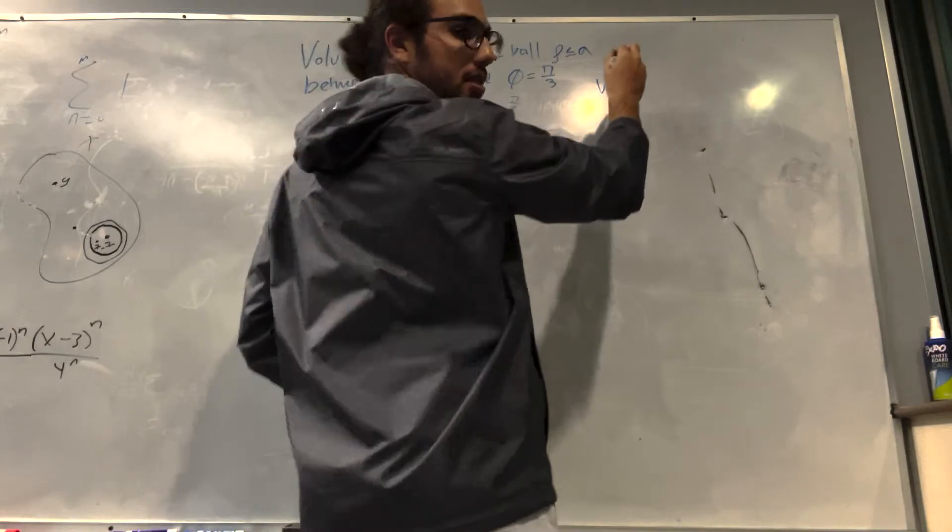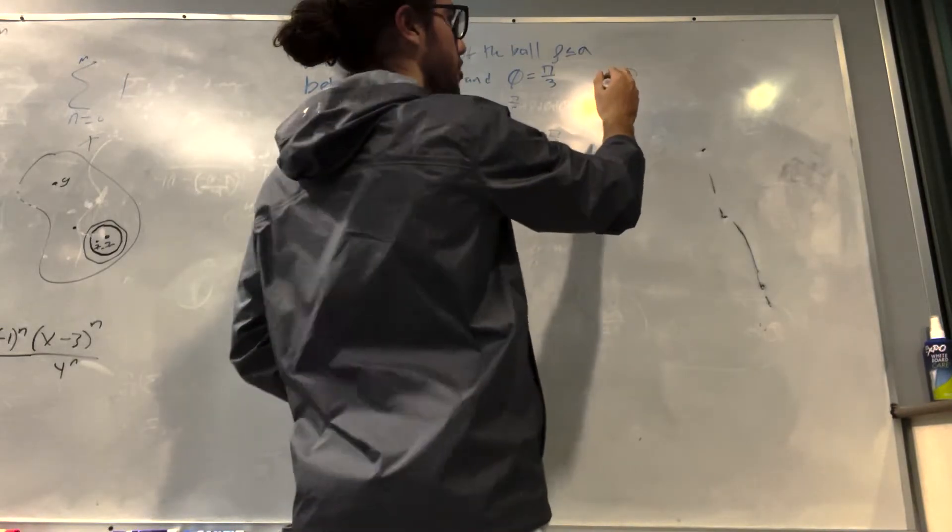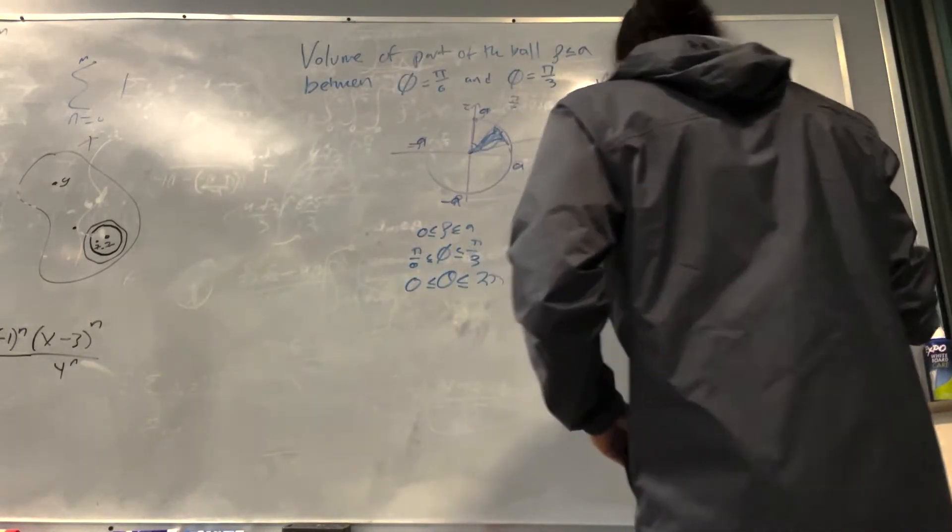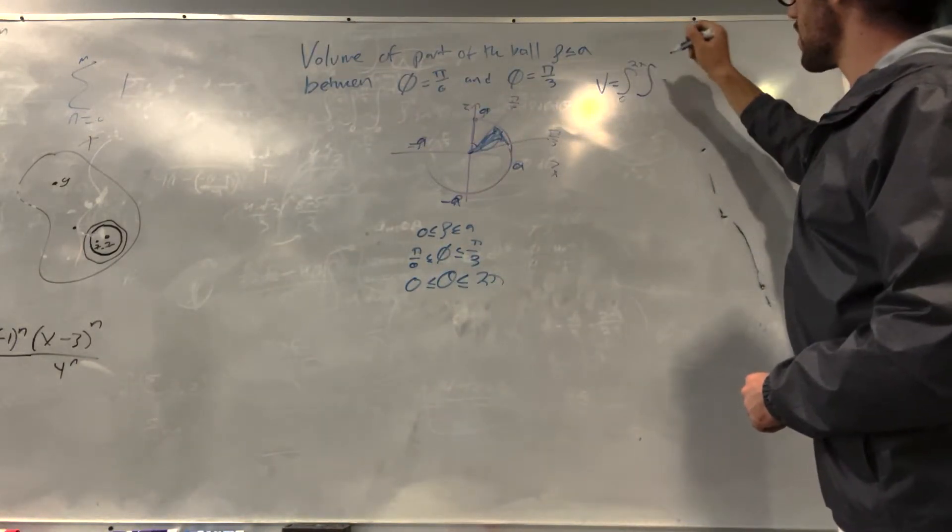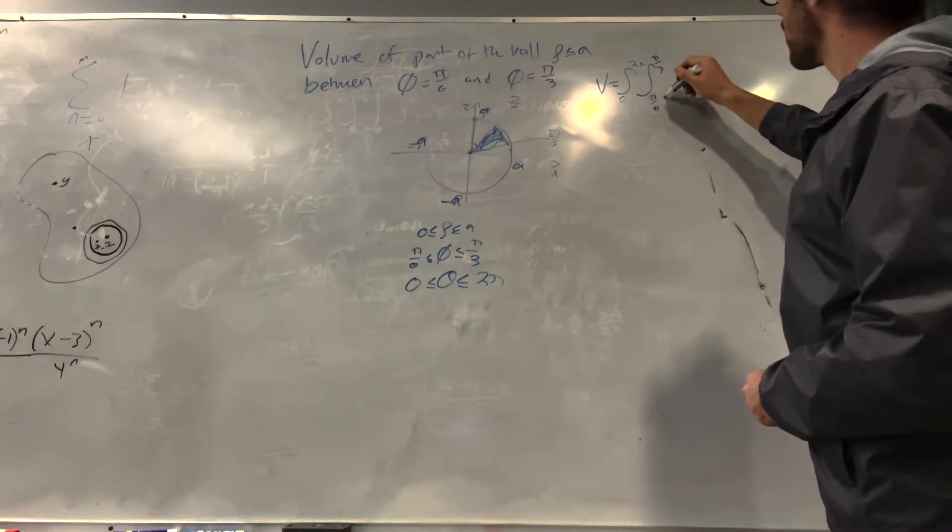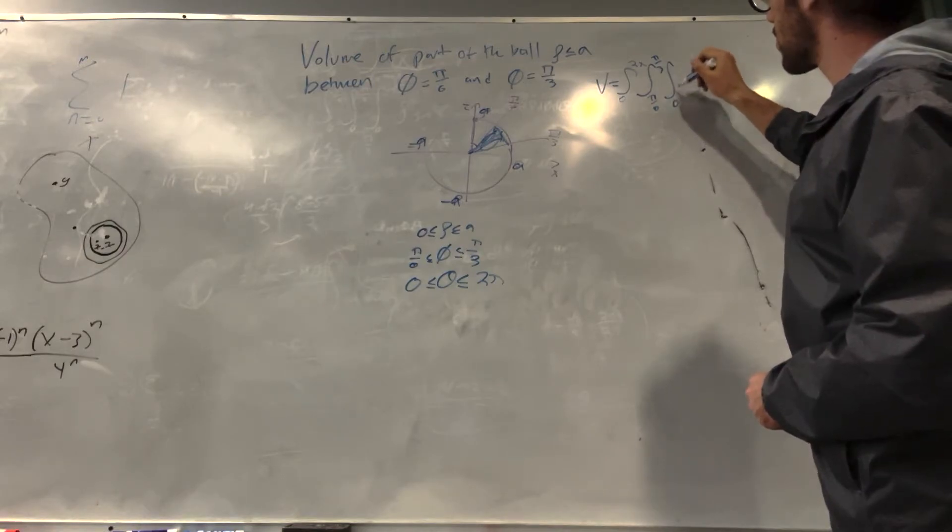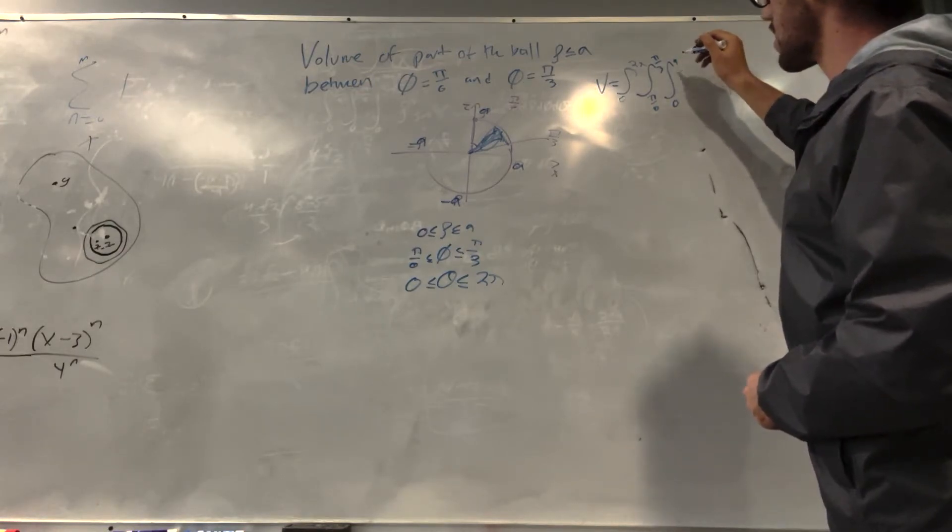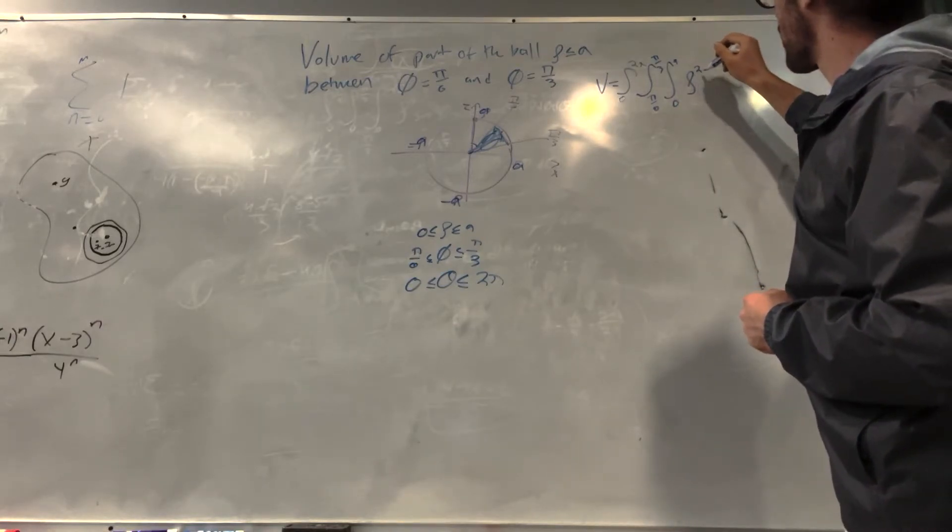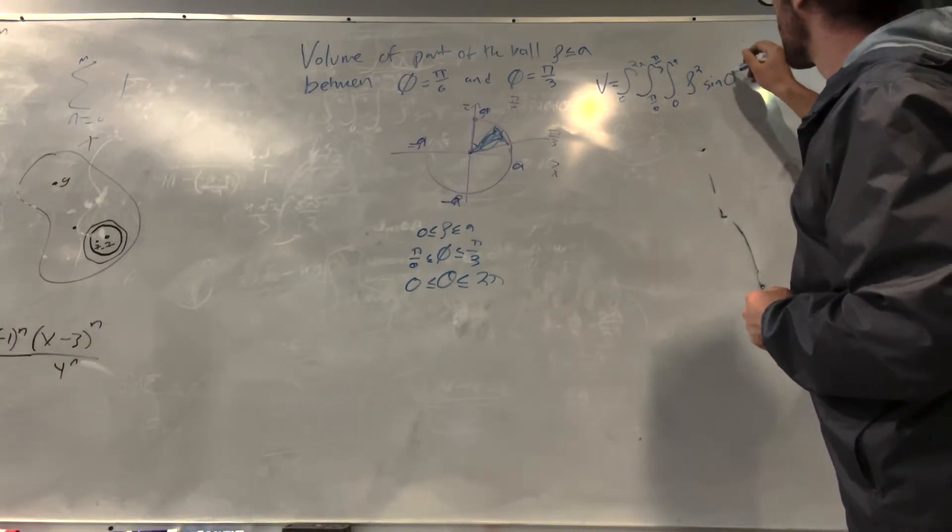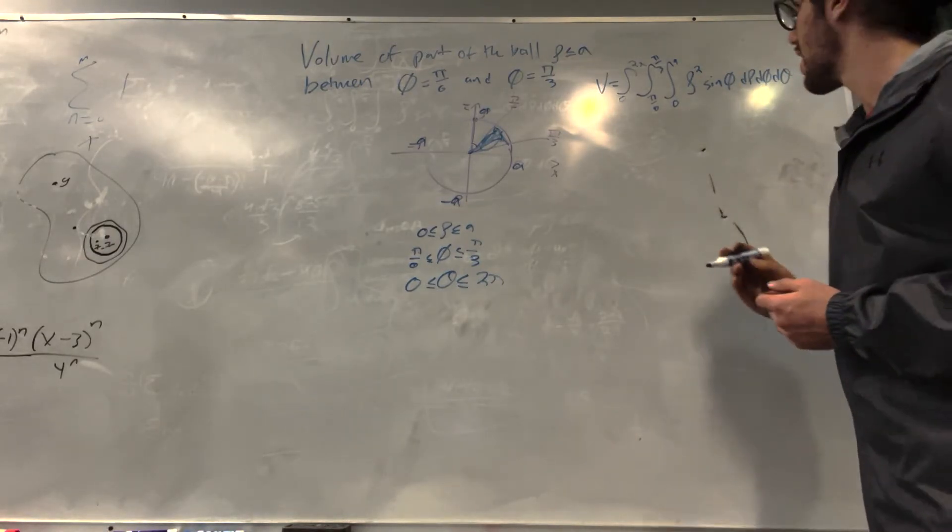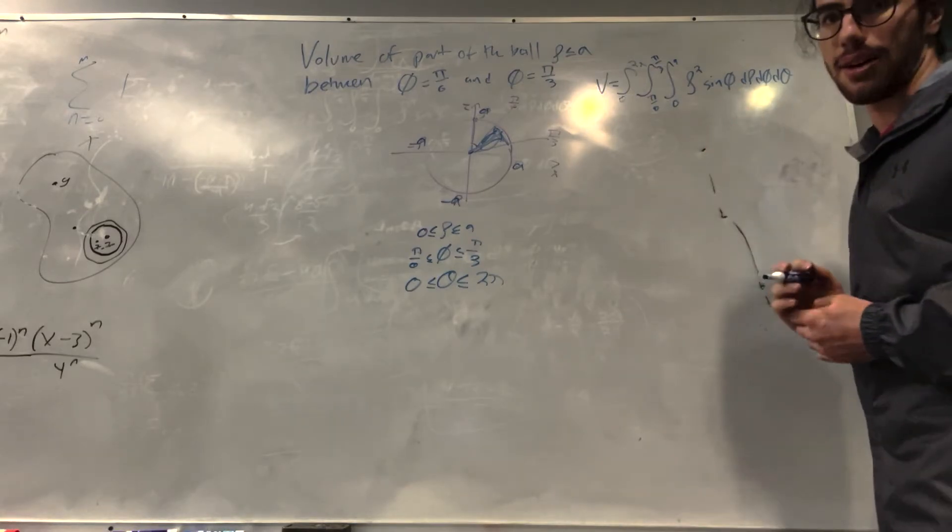Volume is equal to - am I in the way? Nope. Okay. So we start on theta first, 0 to 2 pi. And then it goes to our phi, which is pi over 6 to pi over 3. And our rho goes from 0 to a. And then because we're in spherical, we have to do the Jacobian, which is rho squared sine of phi d-rho d-phi d-theta. Alright, now we have our integral. So this is it. Now we solve this.